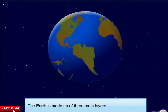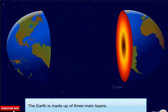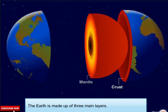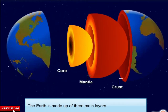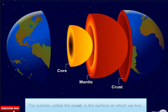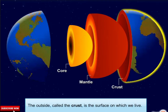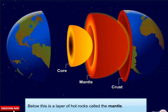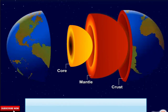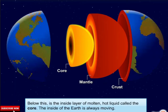The earth is made up of three main layers. The outside, called the crust, is the surface on which we live. Below this is a layer of hot rocks, called the mantle. Below this is the inside layer of molten hot liquid, called the core.